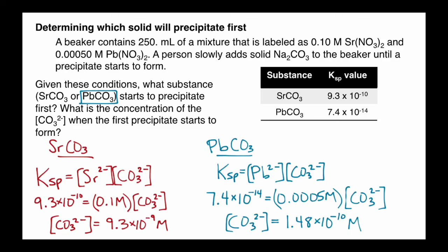And what's the concentration of CO3 2 minus, the carbonate ions, when the first precipitate starts to form? That's going to be the 1.48 times 10 to the negative 10th molar.